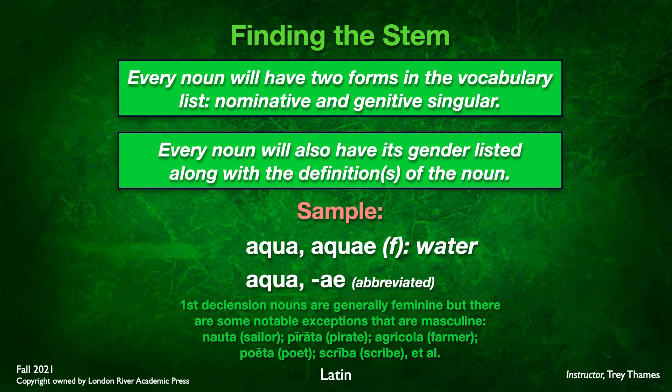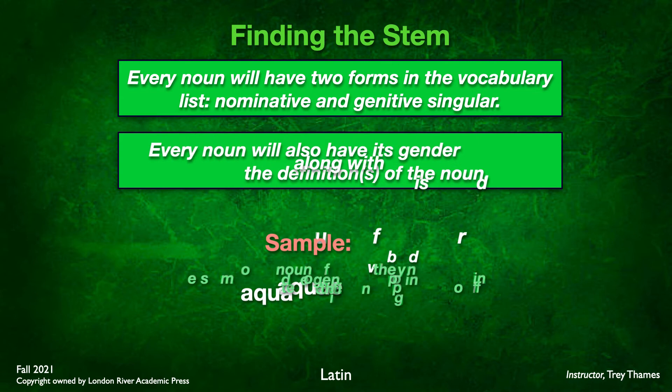A quick note: first declension nouns are generally feminine — almost all of them. There are a few notable exceptions: words that are masculine because they were vocations only available to men in the first century. These include nauta (sailor), pirata (pirate), agricola (farmer), poeta (poet), scriba (scribe), and a few others. But the far majority of first declension nouns are feminine.